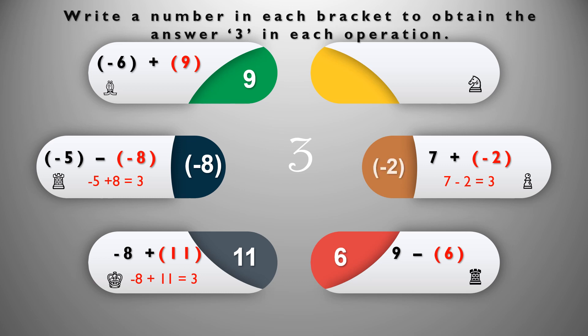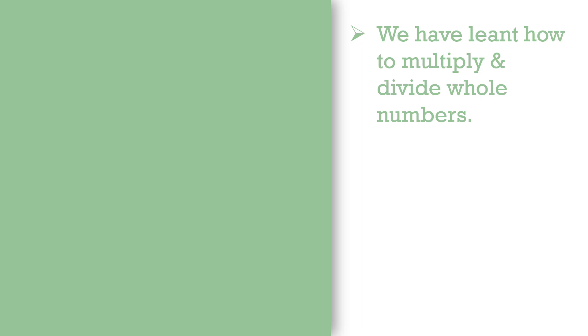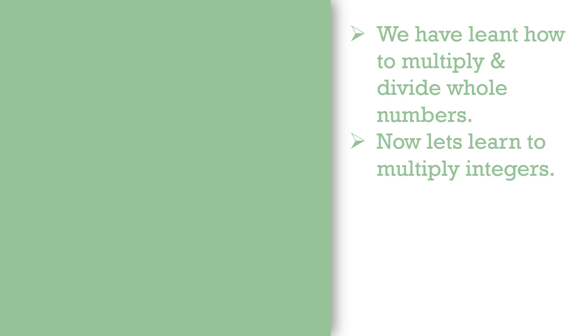Write here: 4 - [1] = 3, so 4 - 1 = 3, meaning we need 1 here. We have learned how to multiply and divide whole numbers. Now let's learn how to multiply integers — multiplication of numbers in the set that includes negative and positive integers and even 0.